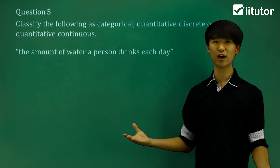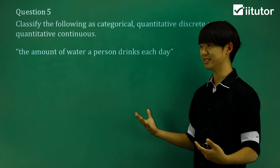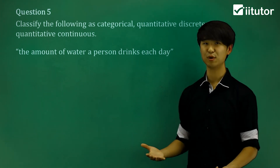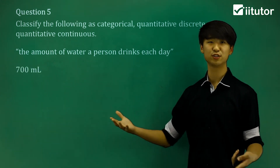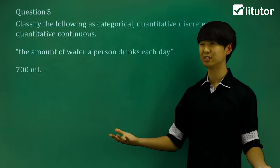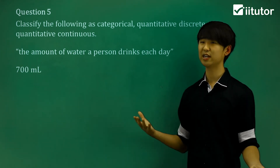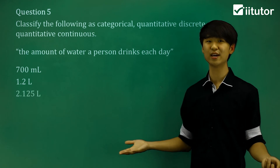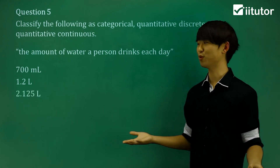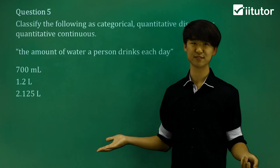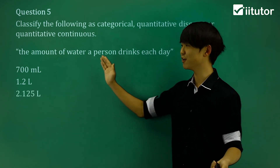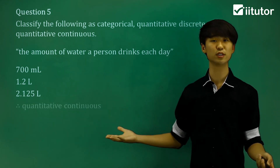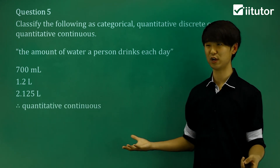The amount of water a person drinks each day will change a lot. For example, a person drinks 700 milliliters a day, or more precisely 1.2 liters a day, or 2.125 liters. As we can see from these examples, this is what we're going to call a quantitative continuous variable.